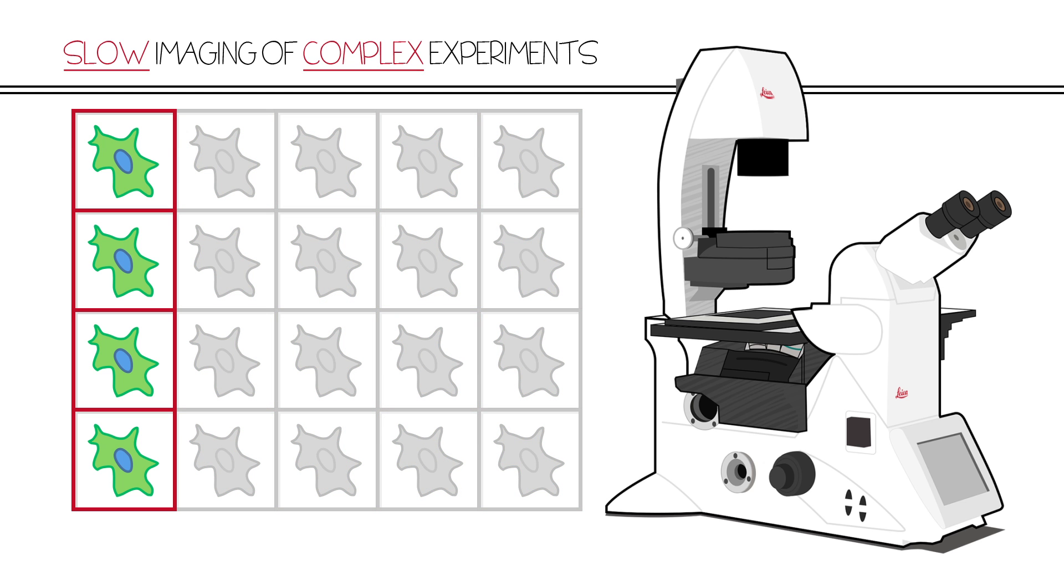However, for more complex experiments involving multiple microscope components such as stage, filter turret, and objective revolver, image acquisition is controlled via software and slows significantly.